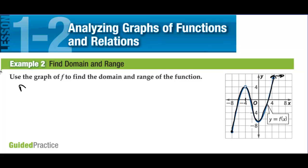So the domain for this function is: we include negative 8, so we have a bracket. Negative 8 to negative 4 — we don't include negative 4 — then we start with negative 4 again, not including it, to infinity. We always put a parenthesis with infinity.